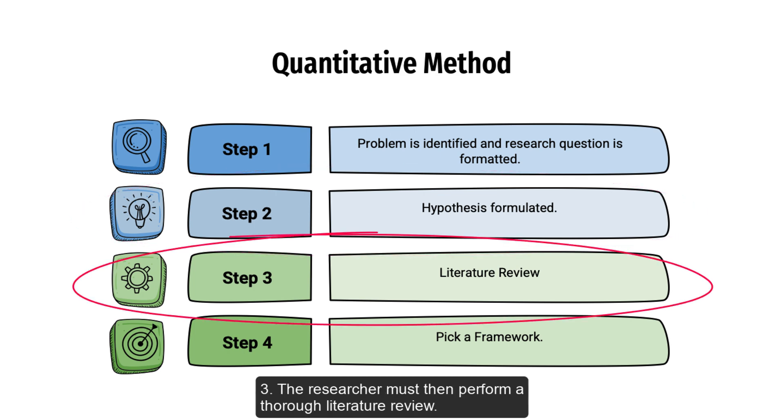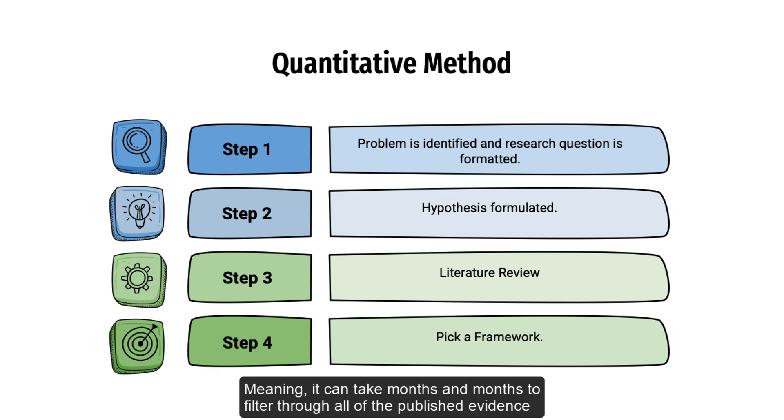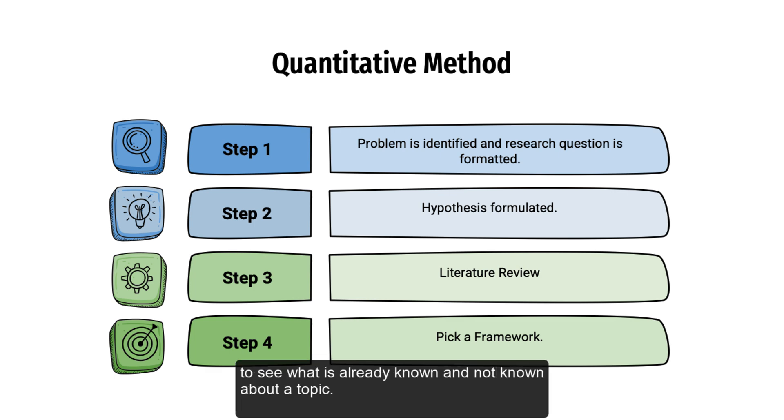Step 3: The researcher must then perform a thorough literature review. This needs to be pretty exhaustive, meaning it can take months and months to filter through all of the published evidence to see what is already known and not known about a topic.